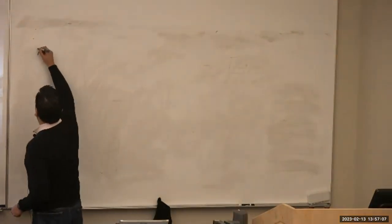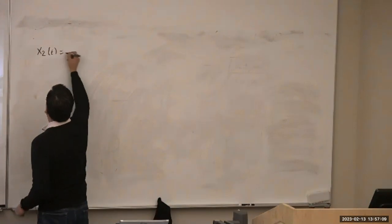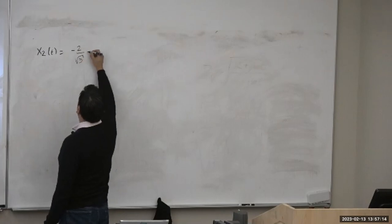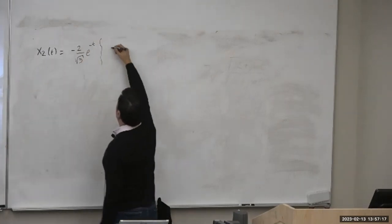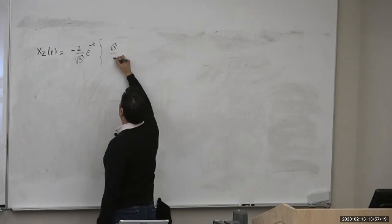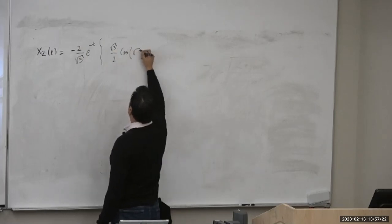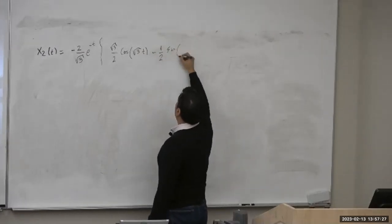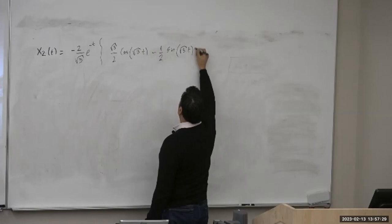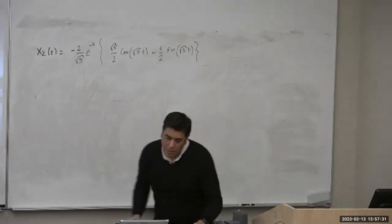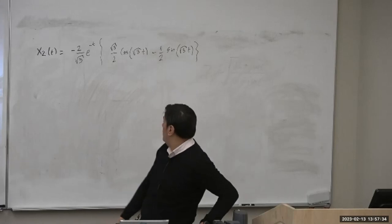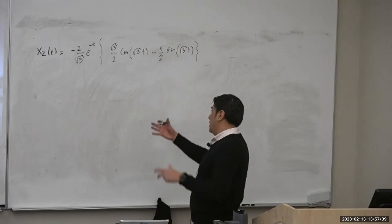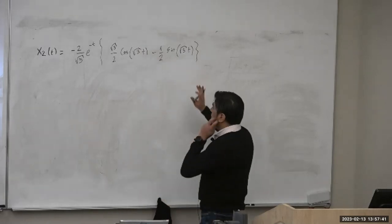The equation for x2 is going to be negative 2 over square root of 3, multiplied by the exponential of negative t, times the factor of square root of 3 over 2 cosine of this term, minus negative 1 over 2 sine of this term. Let me check — yes, okay, that's what we have and up to there we're fine.